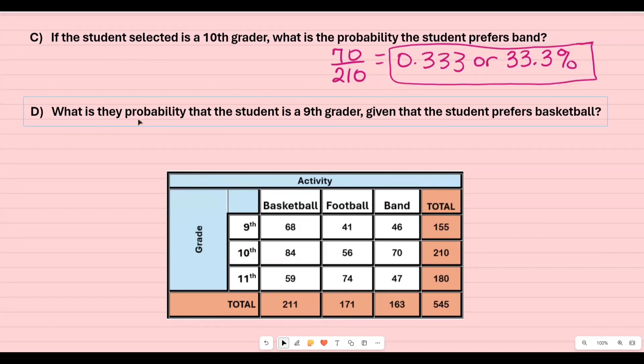Part d says what is the probability that the student is a ninth grader given that the student prefers basketball? Again I'm not looking for the whole student body population. I only want the ones that prefer basketball. So I'm going to look for the total students all of my students that prefer basketball. So 211 will be in my denominator.